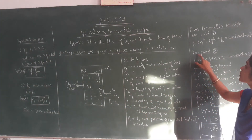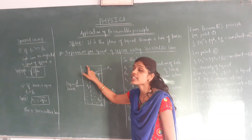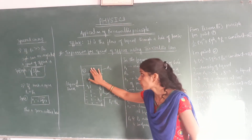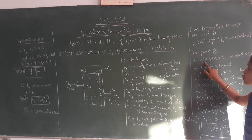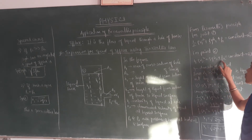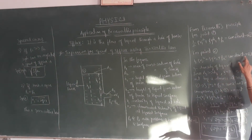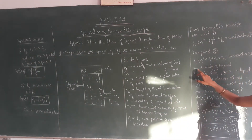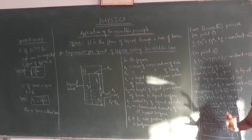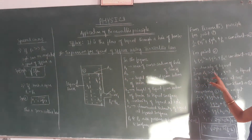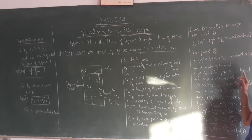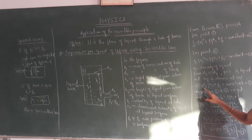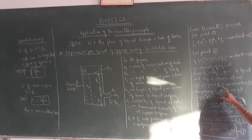This is for point 1. For point 2, which is the liquid surface, applying Bernoulli's principle gives: half rho V2 squared plus rho g H2 plus P0 equals constant. Let us consider this as equation 2. Since area A2 is far greater than area A1, the velocity V2 becomes approximately zero — the liquid at the top is almost at rest. Therefore equation 2 becomes: rho g H2 plus P2 equals constant. Let us call this equation 3.